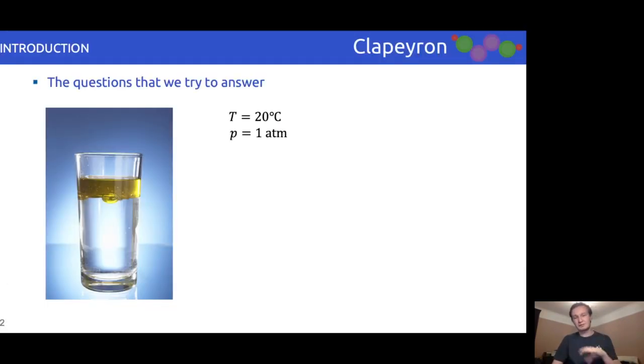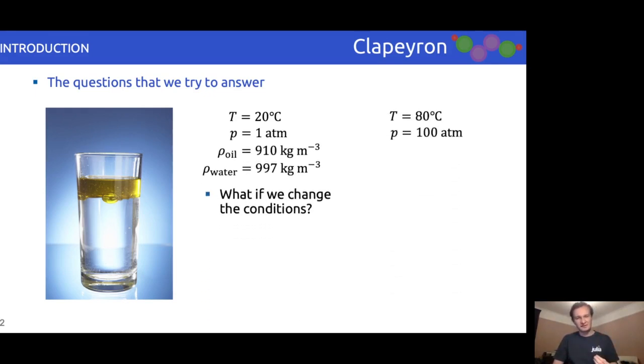To give an example of what we use equations of state for, let's take a glass of oil and water at standard conditions. Most of us know what the density of the two liquids will be at these conditions. However, what happens when we change the conditions? How does the density of each phase change?